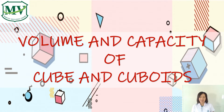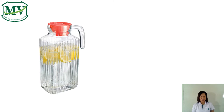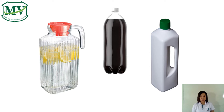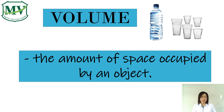Before we start our discussion, let's review the difference between volume and capacity. Capacity is the amount of space a container can hold. Look at these containers — each container can hold 1 liter of liquid. That is the amount of space they have for holding a liquid, so each container has a capacity of 1 liter.